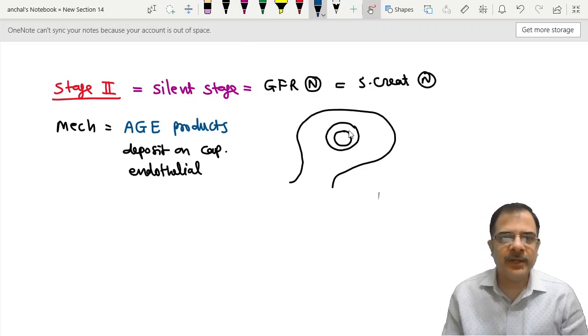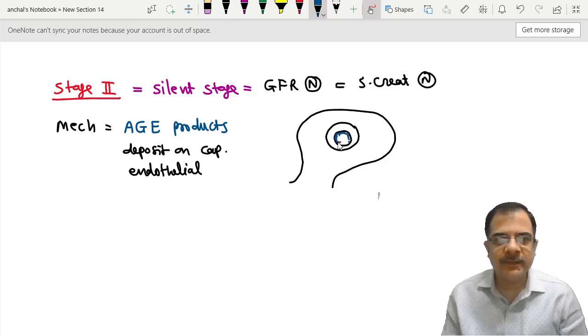Understand this phenomenon importantly. In stage 1, this was dilated. Now, the AGE products are deposited on this layer. So it will make the lumen normal. Initially it was dilated, but when they get deposited, the lumen will become normal now. From dilated to normal. So GFR returns to normal, creatinine returns to normal.